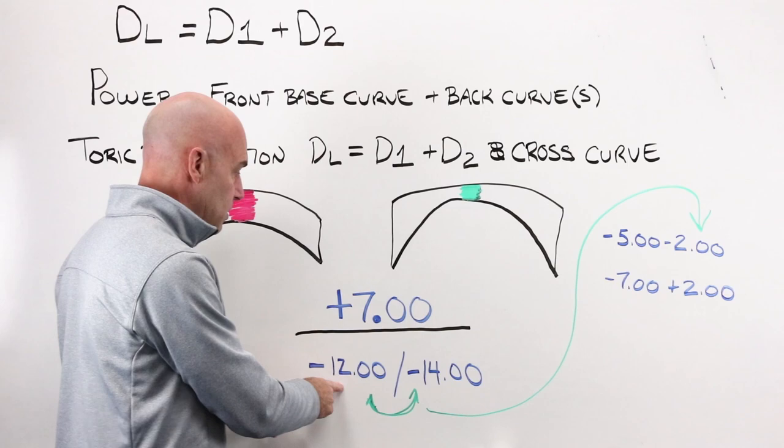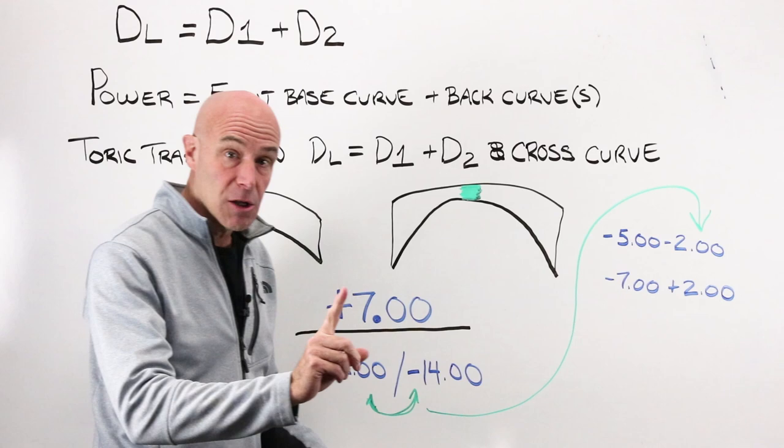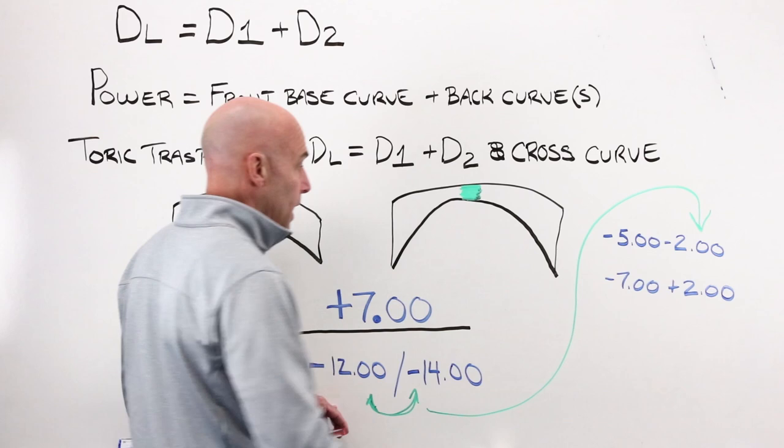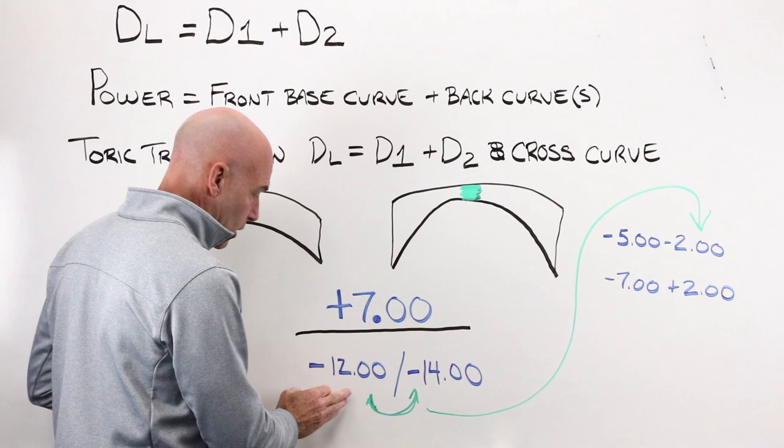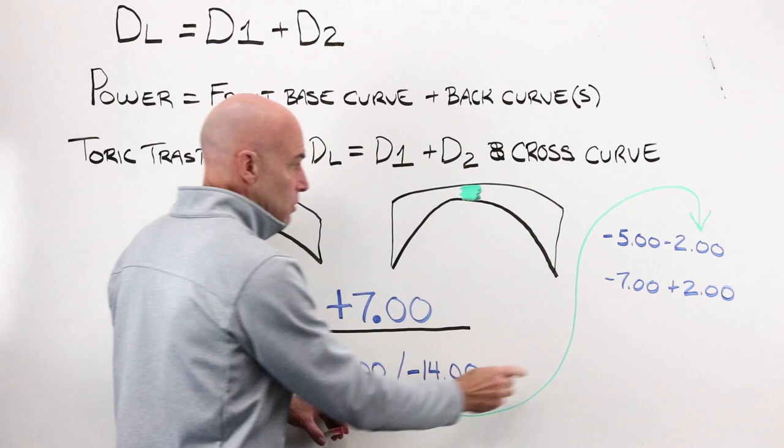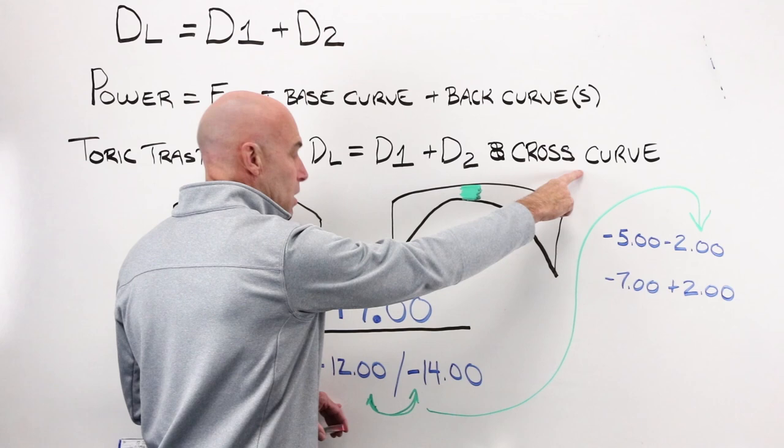This lens does not have a single curve on it, it has two curves. The other curve, of course, is 90 degrees away, and that power total gives me minus seven. The difference between the curve that gives me my minus five, and the curve that gives me a minus seven, is two diopters stronger. It's known as the cross curve, and the difference between these two is always equal to your cylinder value.